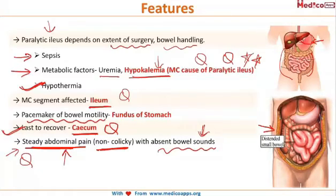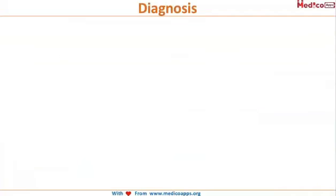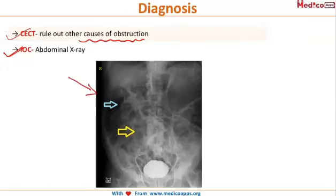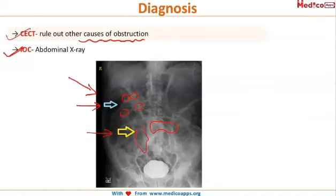For diagnosis, CECT is used to rule out other causes of obstruction, and the investigation of choice is the abdominal X-ray. On the abdominal X-ray, as you can see in this image, the blue arrow shows multiple air-fluid levels due to the collection of fluid and gas in the bowel, and the yellow arrow shows distension and dilated bowel loops.